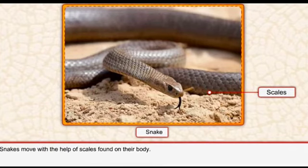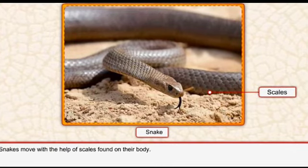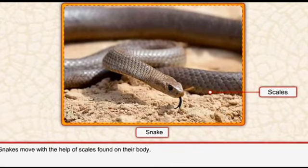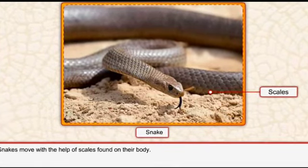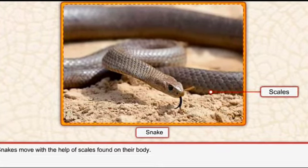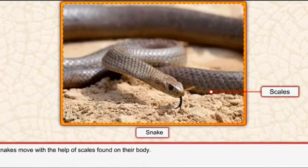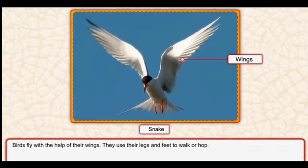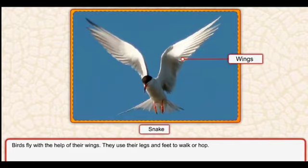Snakes move with the help of scales found on their body. Snake jo hota hai woh move karta hai scales ki madad se jo ke unki body ke upar present hote hain. Birds fly with the help of their wings - jo parinde hote hain woh apne pankhon ki madad se udte hain.